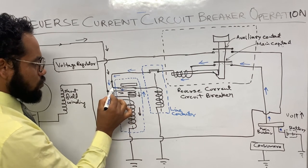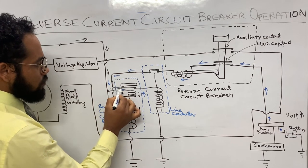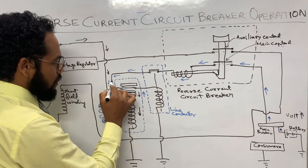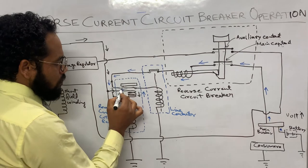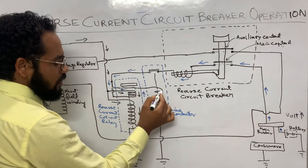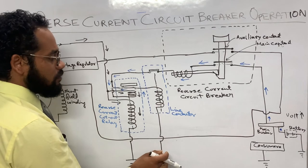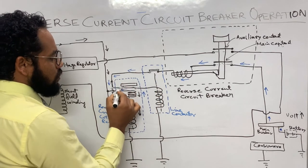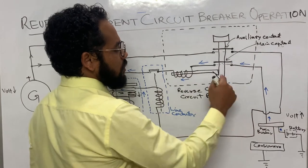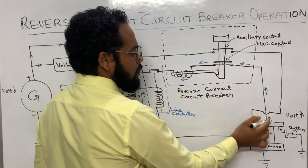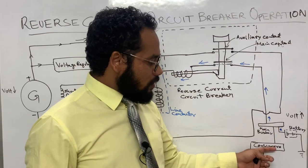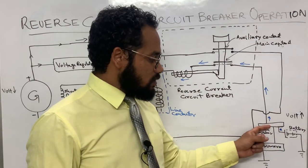The current goes in two paths — one through the voltage coil side and the other waiting at a point. Through the current coil path, the current energizes the coil of the line contactor, which closes its contact. Now the generator output current passes through the magnet system coil of the reverse current circuit breaker and through the main contact to the main bus bar and batteries. The consumer equipment and electrical loads on the main bus bar receive power.